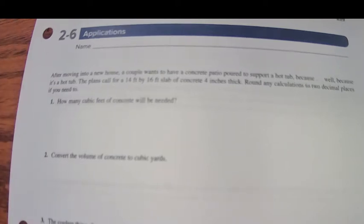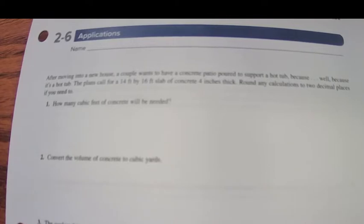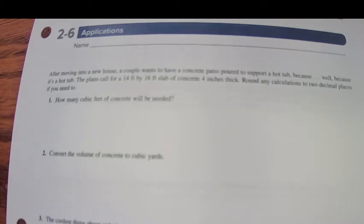Now in section 2.6, we'll look at relative difference or relative error, and we'll also do a little bit more complicated dimensional analysis. After moving into a new house, a couple wants to have a concrete patio poured to support the hot tub. The plans call for 14 feet by 16 feet slab, but it's going to be 4 inches thick.